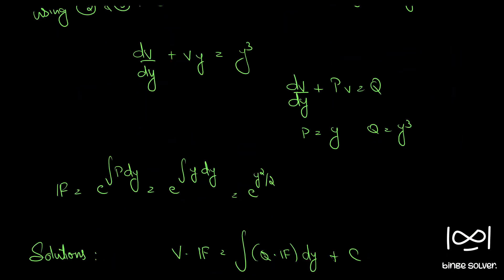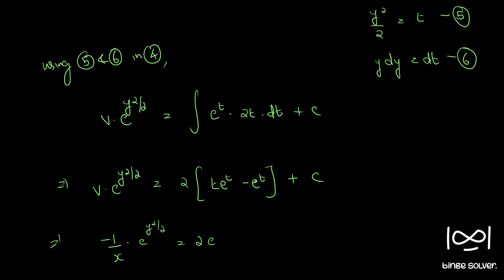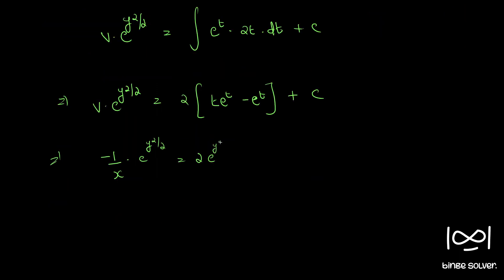From equation 2, v equal to minus 1 by x. So minus 1 by x e raise to y square by 2 equal to 2 times e raise to t common, where t is y square by 2, giving y square by 2 minus 1, plus c.